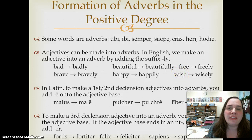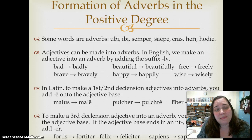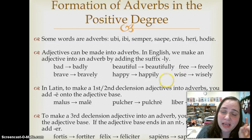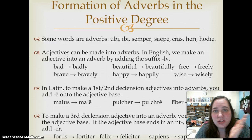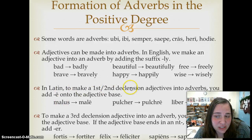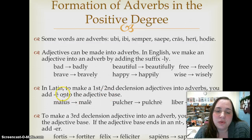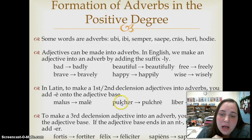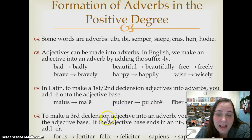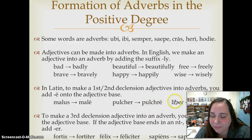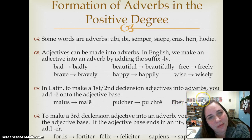You need to know two rules for making a positive degree adjective into a positive degree adverb. The first is for first and second declension adjectives — you add an -e to the adjective base. So malus, bad, becomes male, badly. Pulcher, beautiful, becomes pulchre — remember that in the adjective base for pulcher, the e falls out. Liber becomes libere.